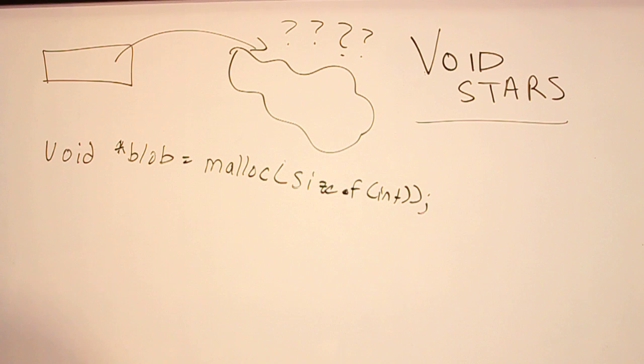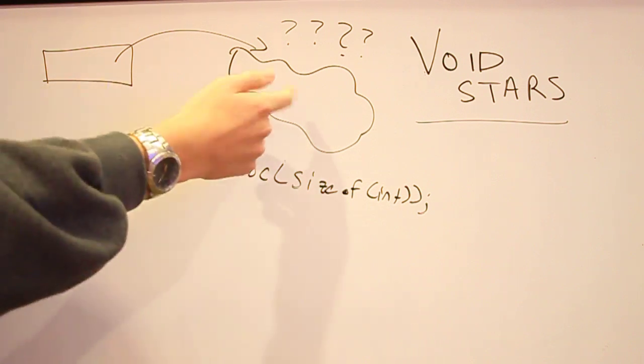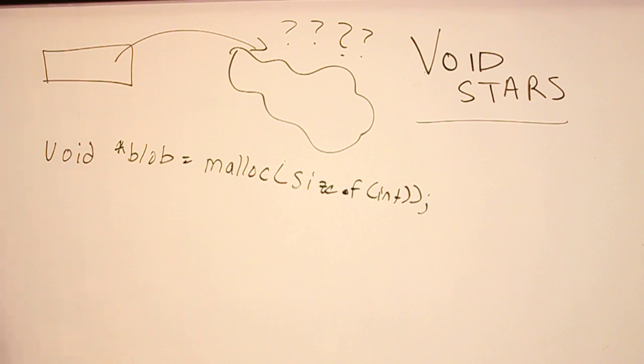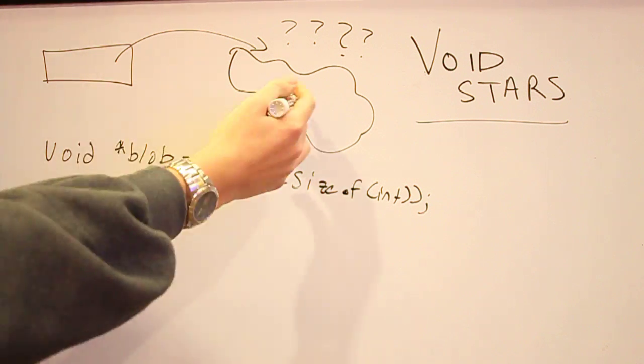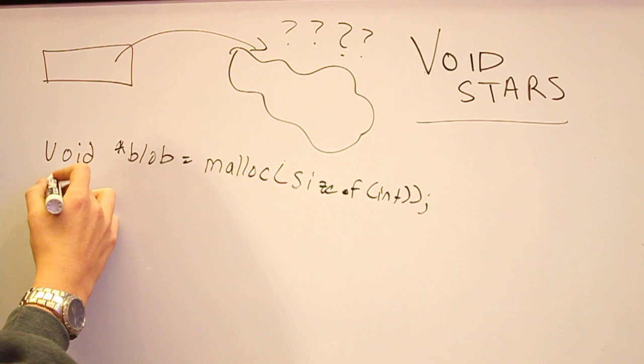But right now, they don't have any value. So, now, we've created this void star right here, and it points somewhere into the heap. Now, let's say that we want to put something in there. Well, first, we have to dereference it to get to that blob. So, we'll put a little star.